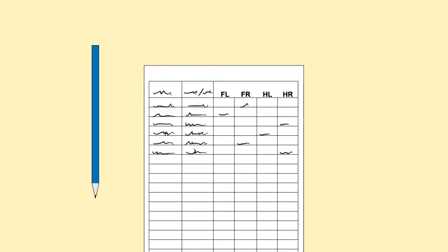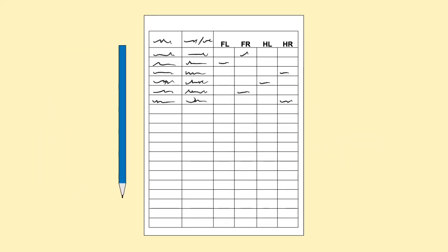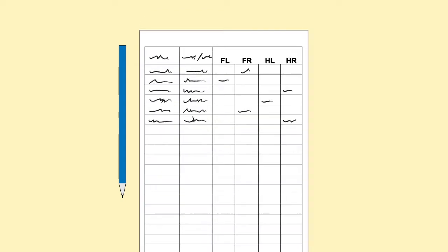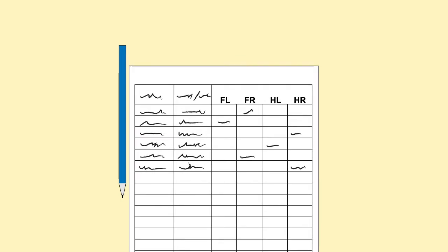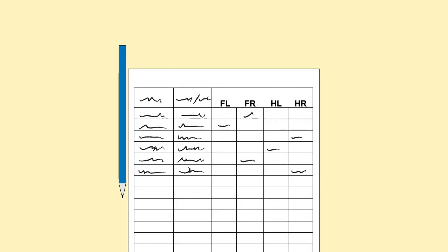Record the date, the cow name or number, and which teat is affected. For example, FL for front left, so that if the mastitis happens again, you will then know whether it's a repeat problem and how many cases you are getting per year.